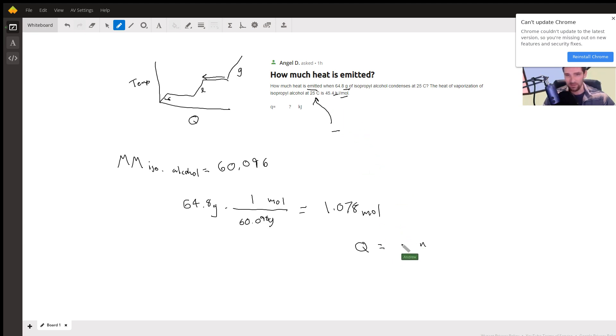Which is 45.4 kilojoules per mole. And that's going to be multiplied by the number of moles, and that should cancel out our units. And that's pretty much all you need to do, and you've got the answer.